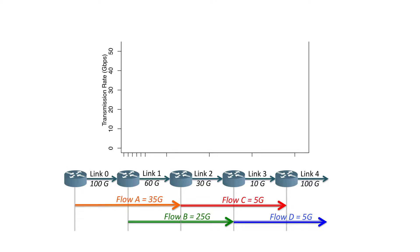I'm going to show you an example of a specific reactive algorithm called RCP, which was designed specifically to converge very quickly to max-fair rates. This is the same network you saw before, and I'm going to show you how RCP tries to figure out the rates for these flows. On the y-axis I have the transmission rate in gigabits per second, and on the x-axis I have the time measured in RTTs — round trip times. Let me plot the ideal rate for flow C, which is the red flow on your right.